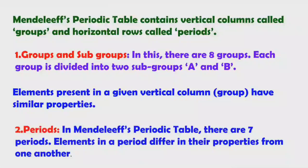Horizontal rows are called periods. In Mendeleev's periodic table there are seven periods. Elements in the same period differ in their properties from one another.